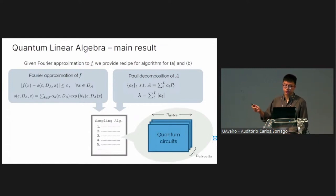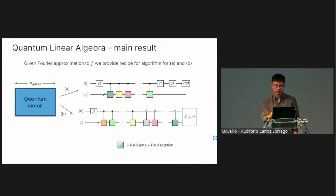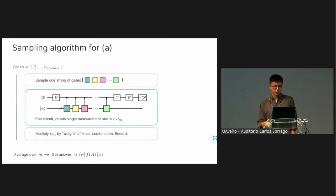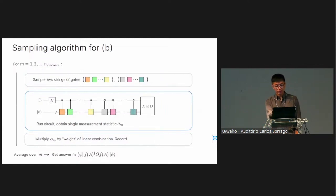This recipe tells us the maximum number of quantum gates and sufficient number of circuits needed to achieve approximation error epsilon. The quantum circuits are simply the Hadamard test circuit or its cousin, where we run controlled Pauli gates and Pauli rotations. Each iteration samples one string of gates from a given probability distribution, runs the Hadamard test, obtains a single measurement statistic, does some post-processing, and averages many times. For general observables, we sample two strings of gates independently — the first set controlled, the second anti-controlled.